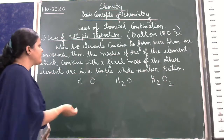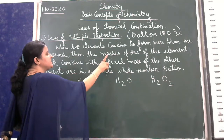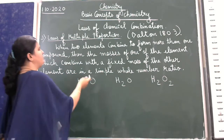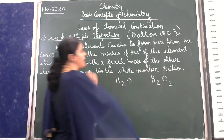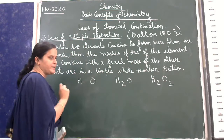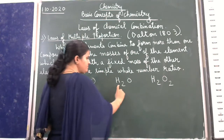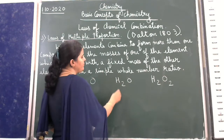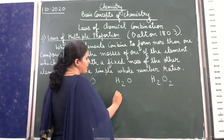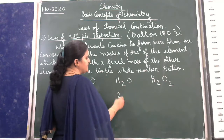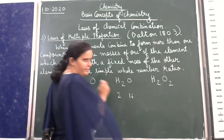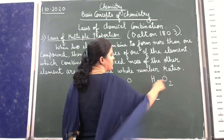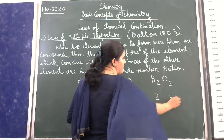The masses of one of the elements which combine with the fixed mass of the other element — so in water H₂O, hydrogen is 2 and oxygen is 16. In hydrogen peroxide, hydrogen is also 2 but oxygen is 32.